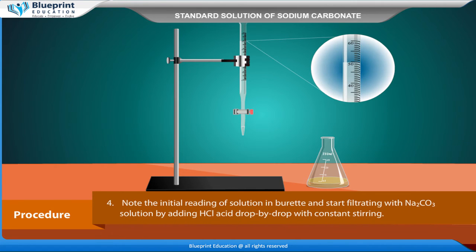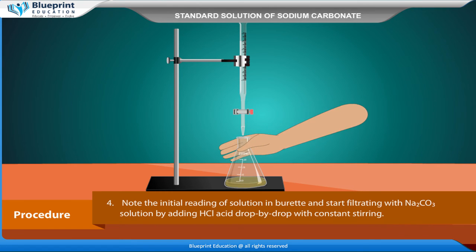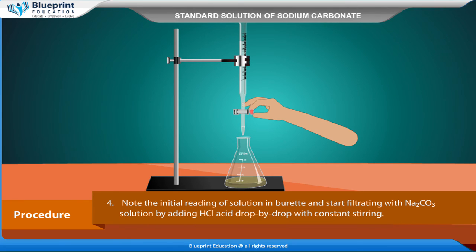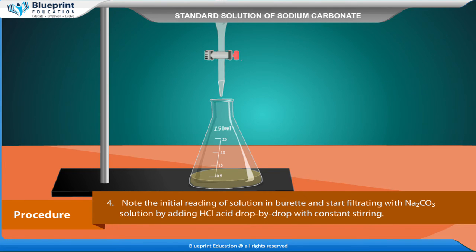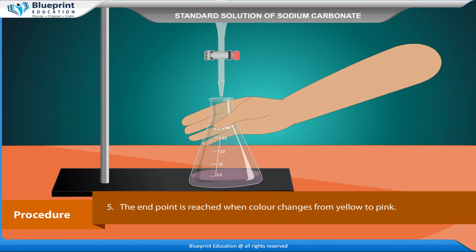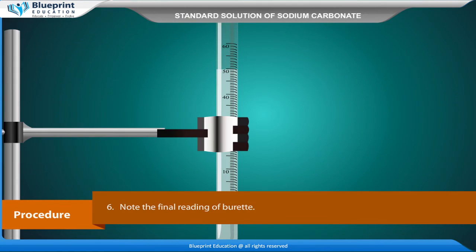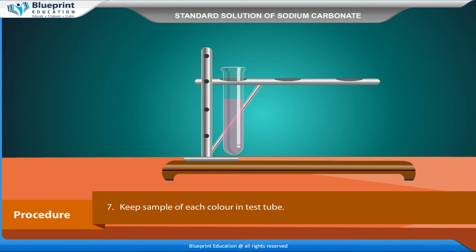Note the initial reading of the solution in the burette and start titrating by adding HCl acid drop by drop with constant stirring. The end point is reached when the colour changes from yellow to pink. Note the final reading of the burette. Keep a sample of each colour in a test tube.